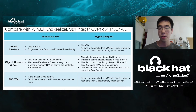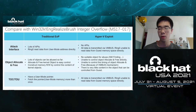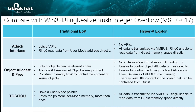About TOCTOU vulnerability: there are two key factors. One is that the parameter passed from a user mode program should be a pointer. The other is that the system call handler fetches the parameter from user memory more than once. But in Hyper-V, all data is transmitted via VMBus, and Ring0 is enabled to read data from guest memory space directly. This is why Hyper-V exploitation is difficult.